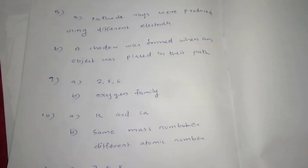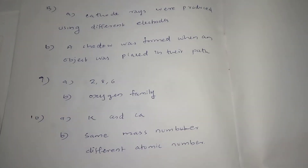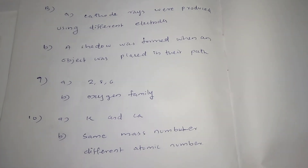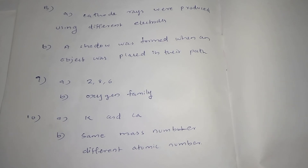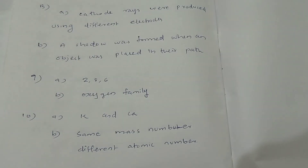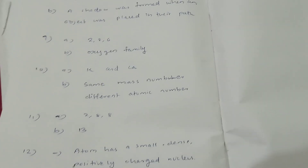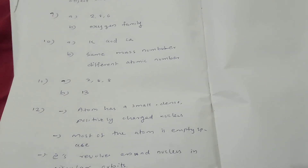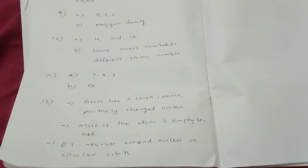Question number 8: A — Paddle wheel rotation shows mass. B — Deflection towards positive plate shows negative charge.